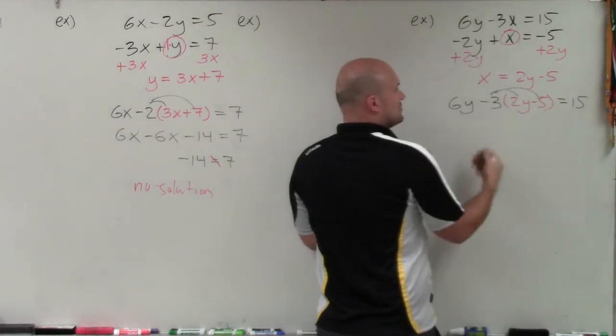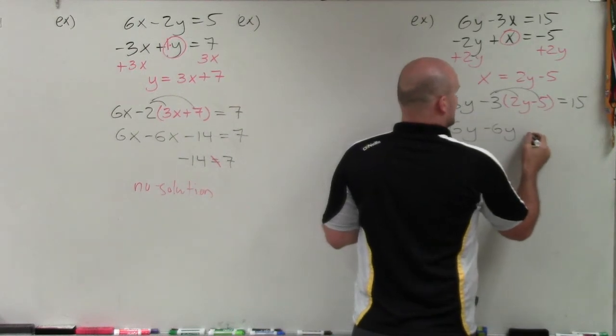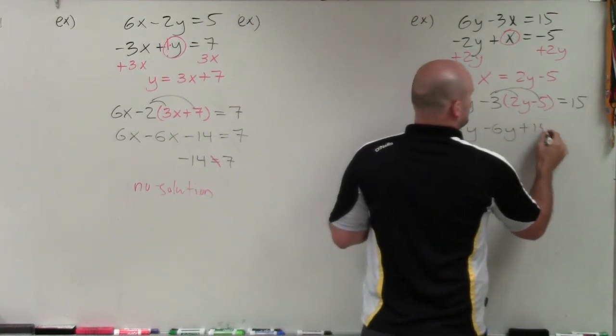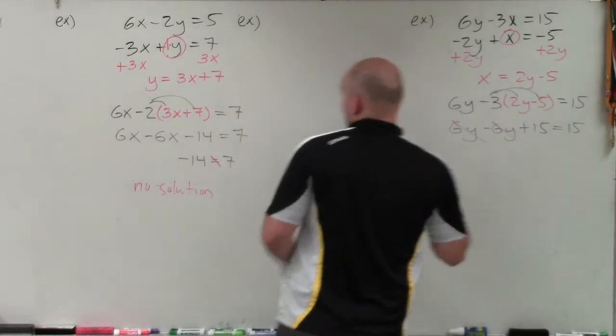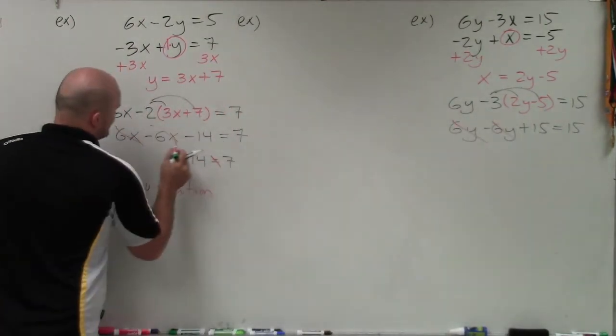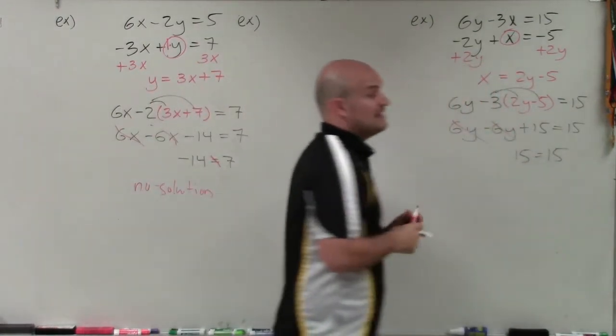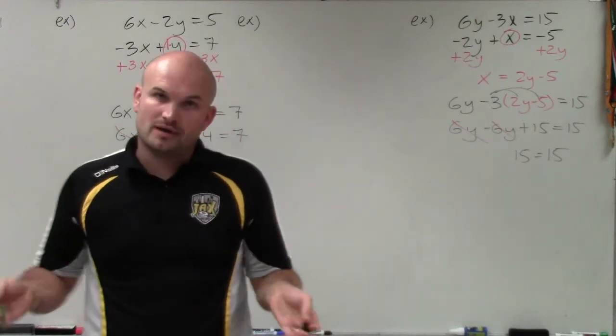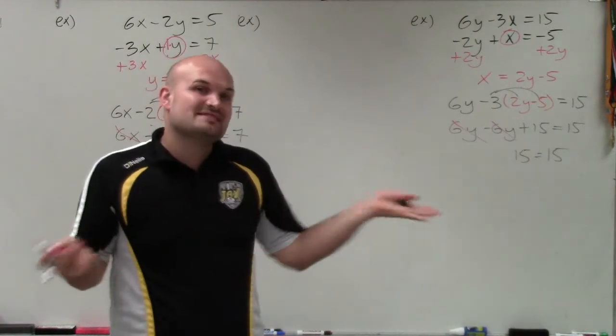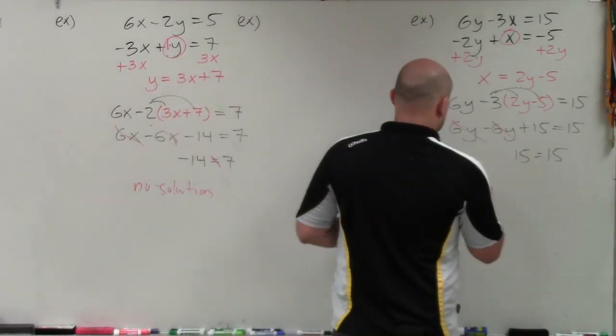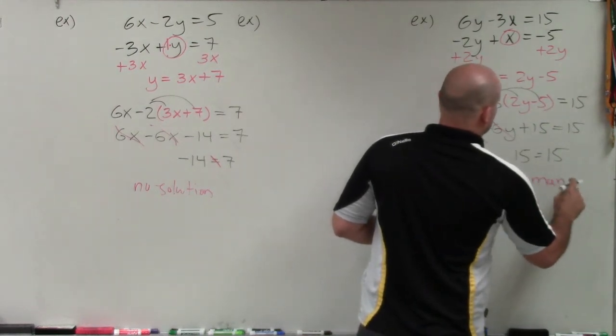Now, again, I apply distributive property to simplify, and I get 6y minus 6y plus 15 equals 15. Well, again, the 6ys are going to subtract to 0, and therefore I'm left with 15 is equal to 15. So now we have an equation that is true. We have 15 equals 15. So that means no matter what value I plug in for x, I'm always going to have a statement that's going to be true. So therefore, this is what we call infinite many solutions.